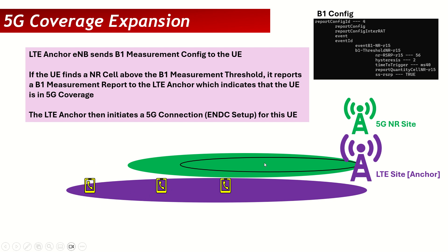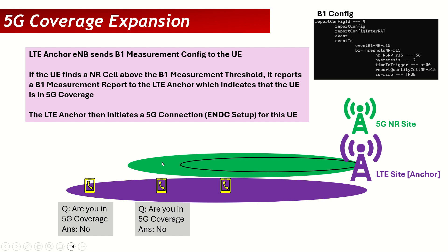In simple words, the LTE anchor is asking all mobiles: are you in 5G coverage? For one mobile the answer is no; for another mobile, even though it is within the 5G coverage of the cell, because it is below the B1 threshold it will also answer no; while a third mobile will answer yes. The LTE anchor will then add a 5G EN-DC setup or 5G service for that mobile only, which will enjoy 5G services while the others only get LTE service.